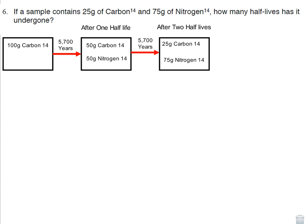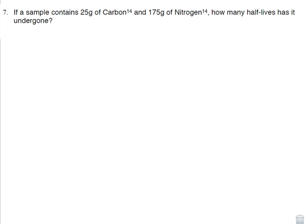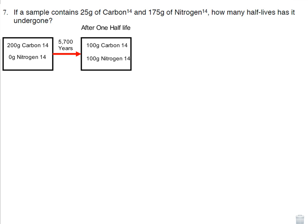One more question, perhaps? If a sample contains 25 grams of carbon-14 and 175 grams of nitrogen-14, how many half-lives has it undergone? Well, what's my starting product? How much do I start with? I would start with 200 grams of carbon-14 and 0 grams of nitrogen-14. And I would look after one half-life, I'd have 100 grams of carbon-14, 100 grams of nitrogen-14. I go another half-life, I get 50 grams of carbon-14, 150 grams of nitrogen. Not there yet.